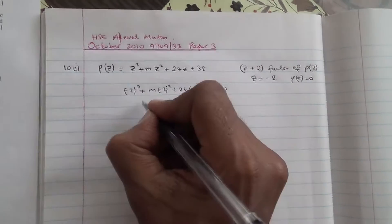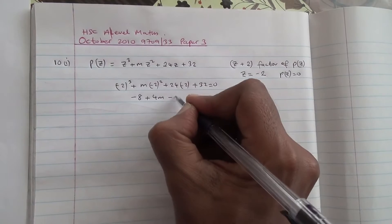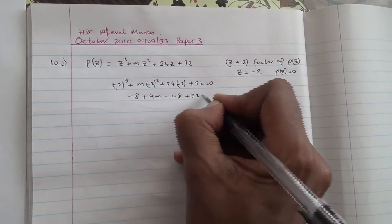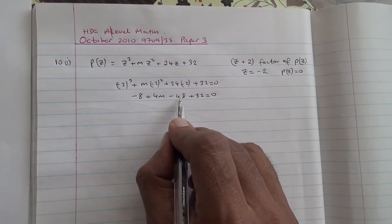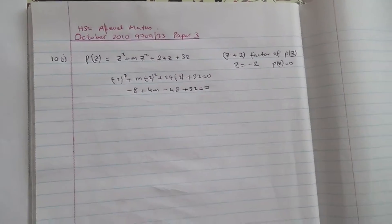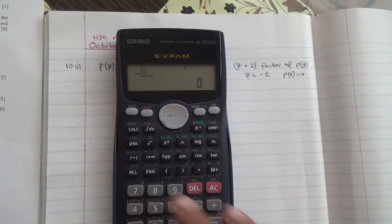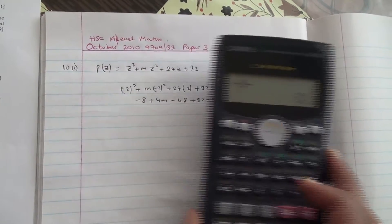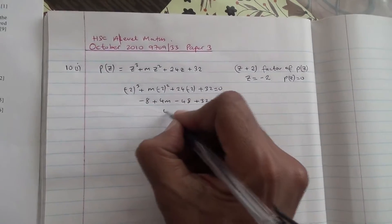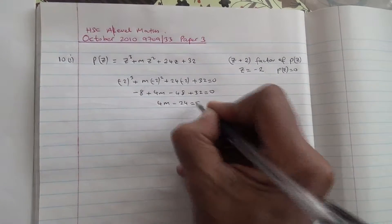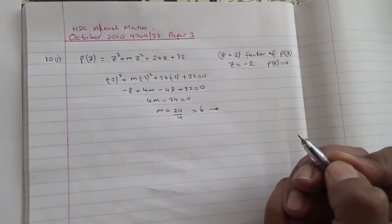This is minus 8. So I've got minus 8 plus 4m minus 48 plus 32 is equal to 0. Now, minus 8 minus 48 plus 32 gives us minus 24. So then 4m minus 24 is equal to 0. m is equal to 24 divided by 4, which means m is going to be equal to 6.